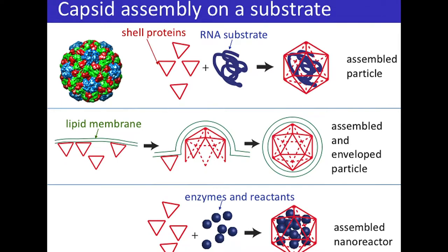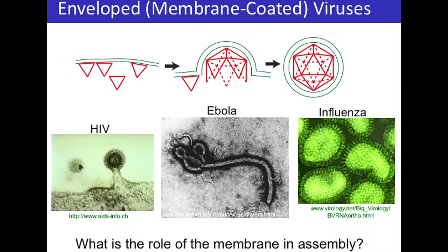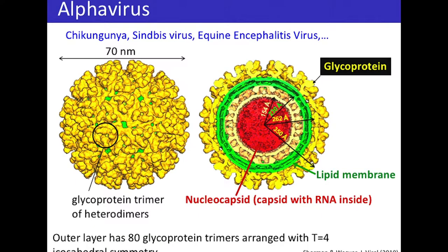To start with assembly on a fluid membrane: this is in the context of enveloped viruses, which need to acquire an outer membrane envelope by budding through a membrane in their host cell, and this includes many of the nastier human pathogens. The particular family I'm looking at is the alpha virus family. Here I'm showing a schematic of the alpha virus — this is Sindbis virus — and it has two layers. On the inside you have RNA surrounded by capsid protein, called the nucleocapsid core.